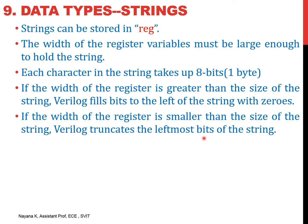In case the width of the register is smaller than the size of the string, Verilog will truncate the leftmost bits. For instance, if we have a 3-byte register and try to store hello (5 characters), only 3 characters fit and H and E are truncated from the left. Now let us see how strings are declared in Verilog. Strings are declared using the keyword reg followed by the name. Here the name is string_value. 19 to 1 means there are 19 character locations.